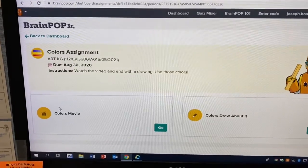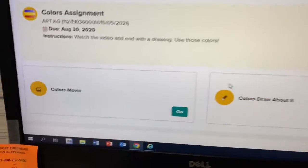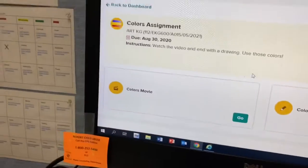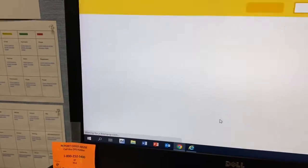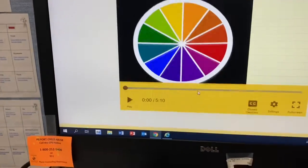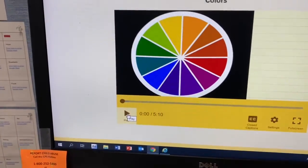You're going to see something that looks like this. You're going to see the colors movie and then the colors draw about it. You're going to press go on the movie and it's about five minutes. Just press play. It's the triangle.